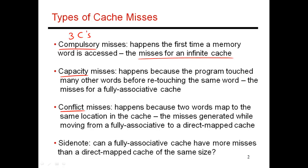Compulsory misses are misses created the first time you access some data. Every time there's a miss — say I'm trying to access variable A — the first time I touch it, it's going to be a compulsory miss. But when I bring things into the cache, it is at the granularity of a cache block, which could be 32 bytes or 64 bytes. So when there's a miss, I bring in an entire 32-byte chunk, and all the neighboring variables that reside in the same cache block get brought in for free.